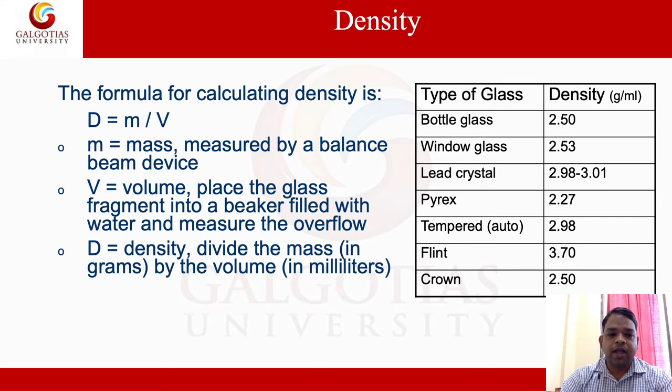Density measurement and comparison between known sample and the suspected sample should be done using fragments of equal size. Samples should be clean and dry, since window glass does not have uniform density. So care must be taken to determine the variation in density of known samples from different locations. Also, the surface of tempered glass is less dense than its interior, so one has to be careful to take measurements of several known samples.